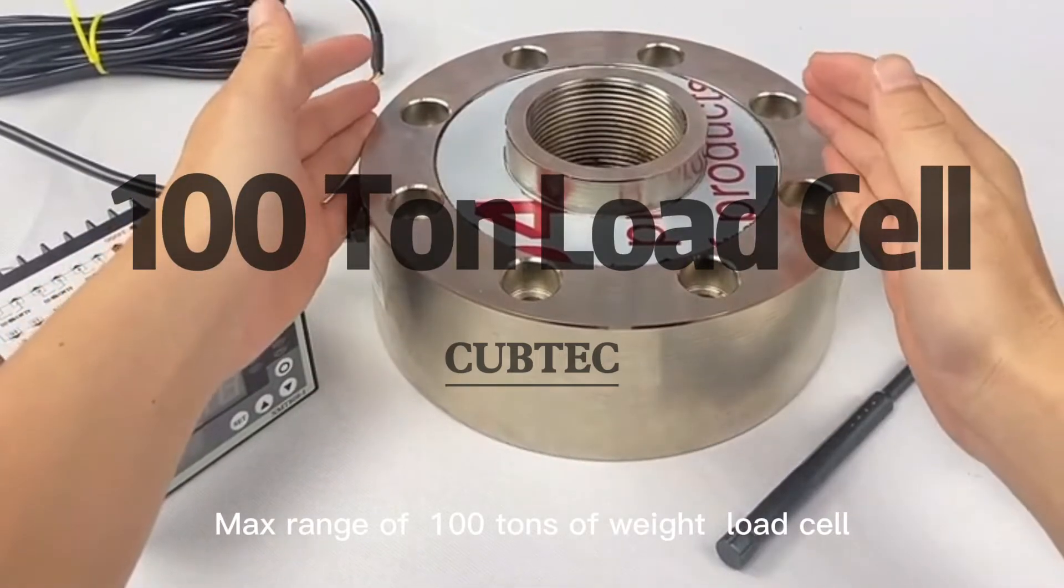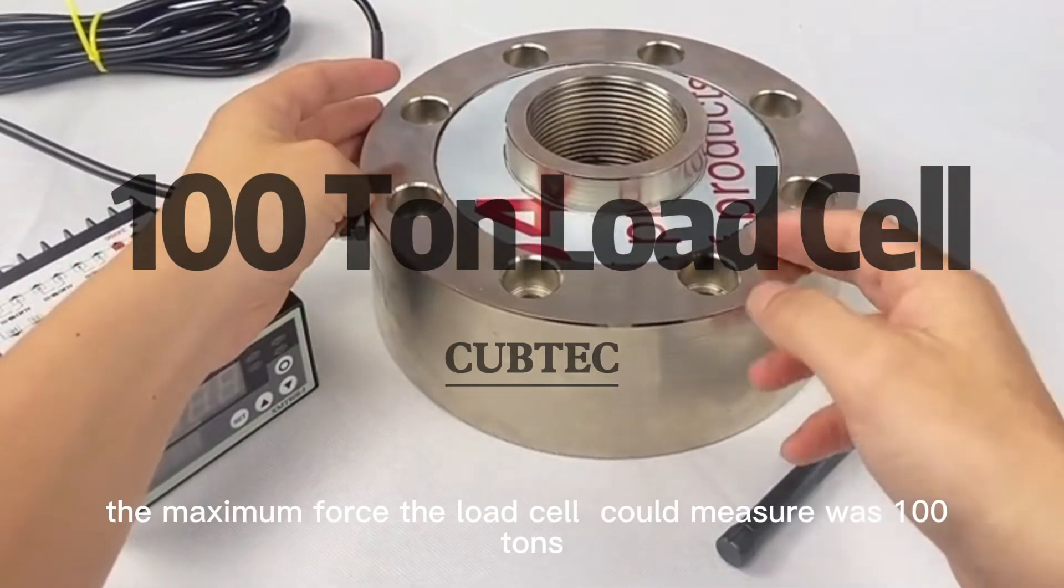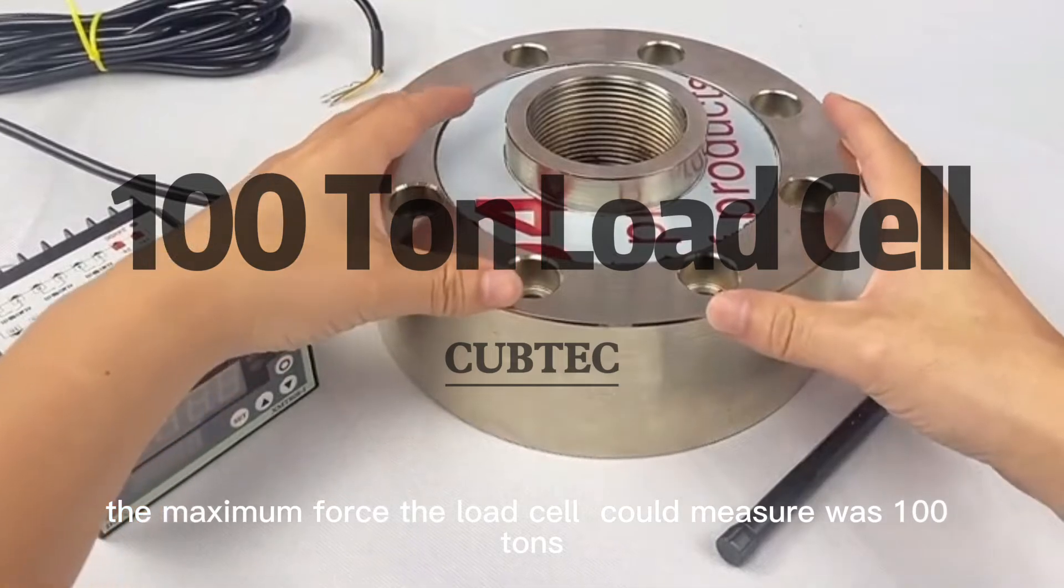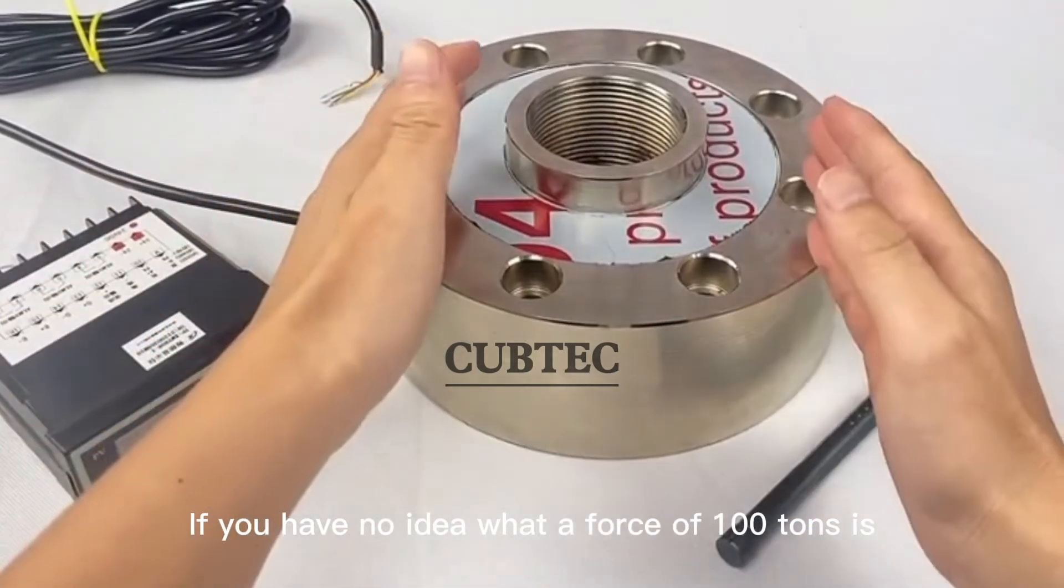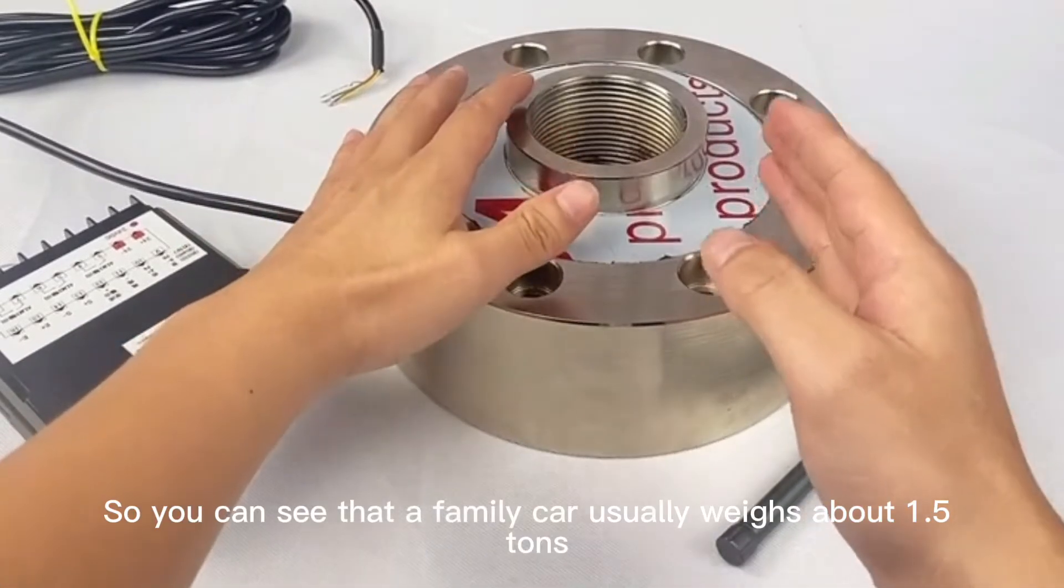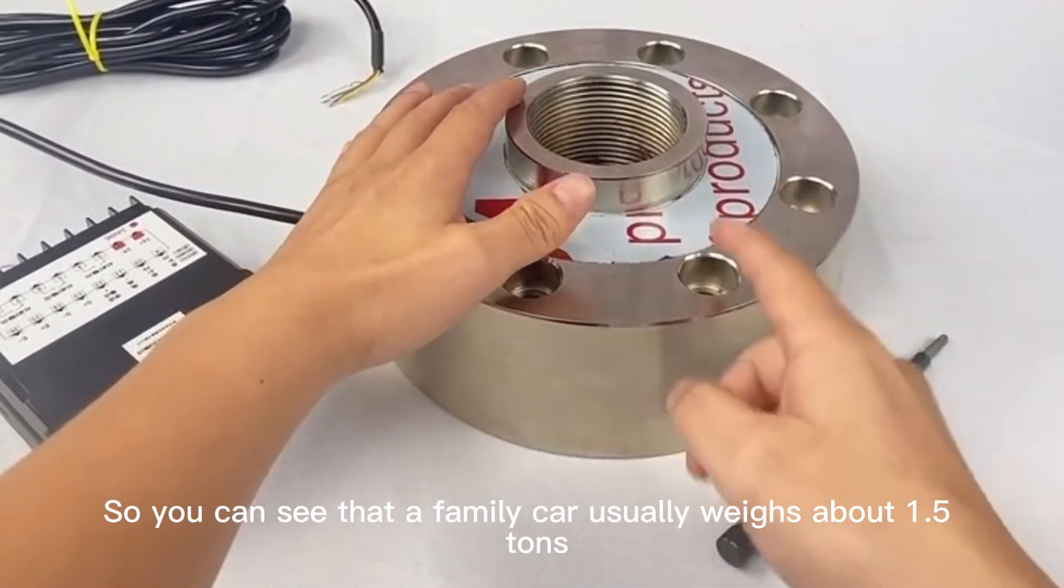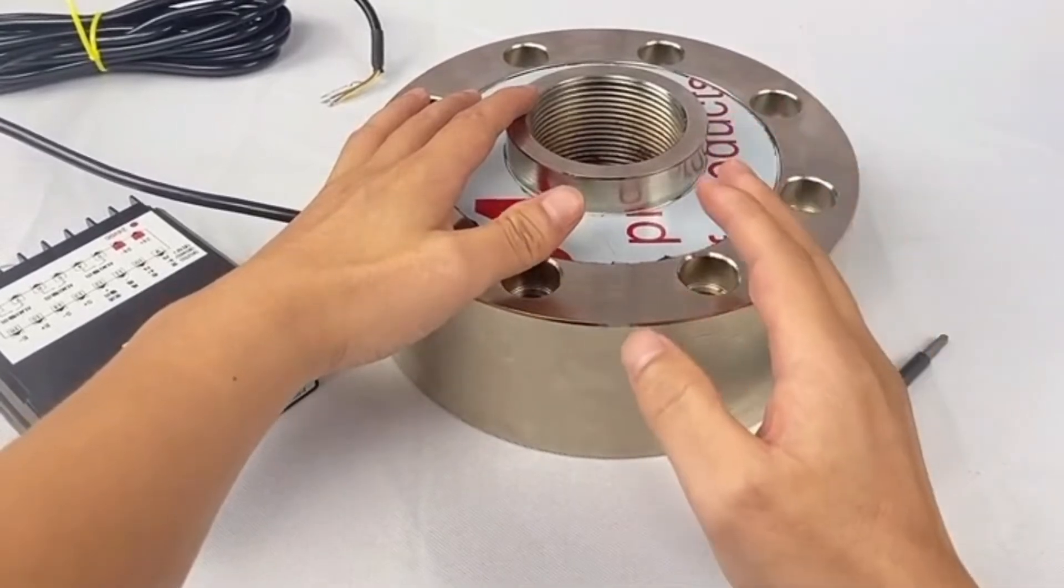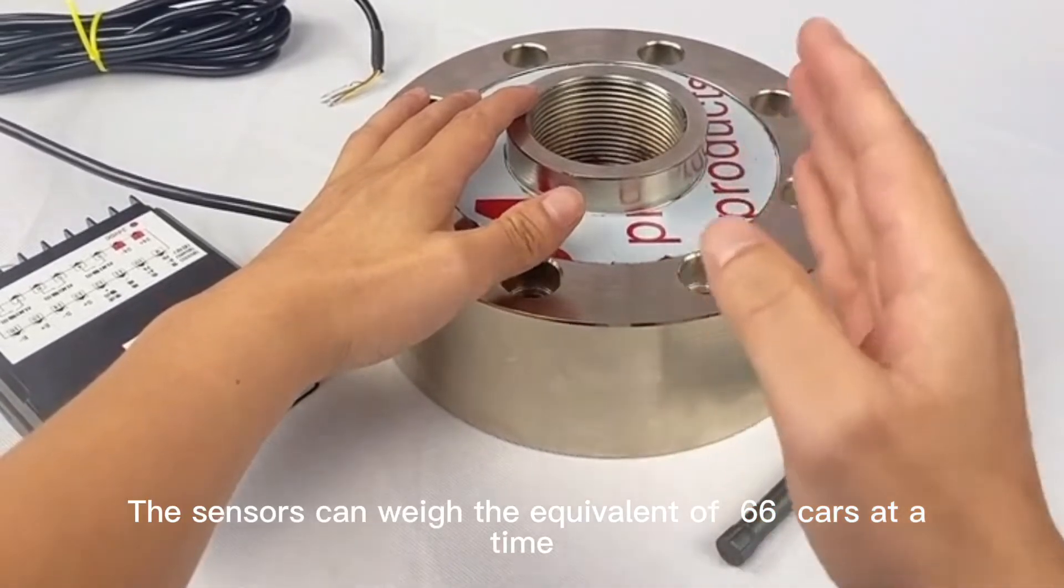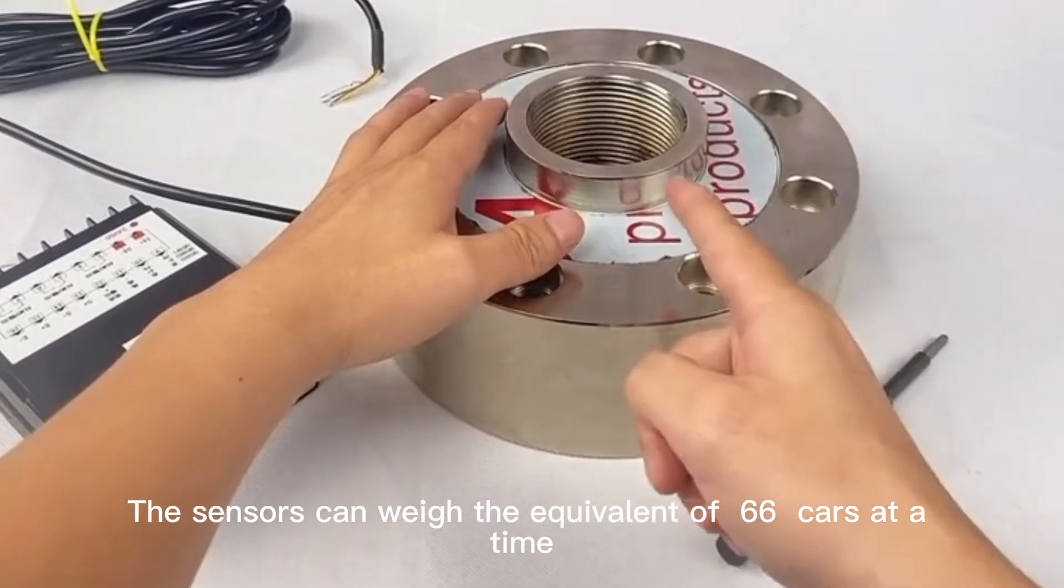This load cell has a max range of 100 tons. If you have no idea what a force of 100 tons is, a family car usually weighs about 1.5 tons. The sensor can weigh the equivalent of 66 cars at a time.